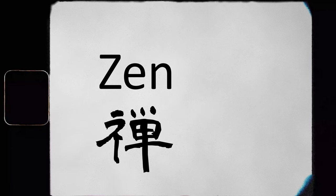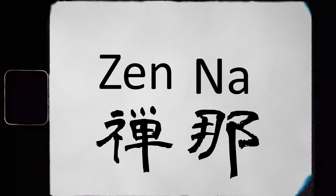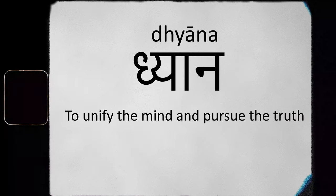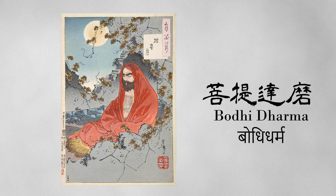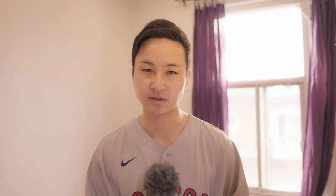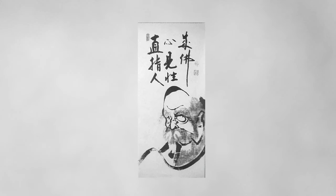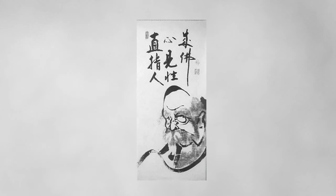Zen is an abbreviation of Zen-na, which is a transliteration of the Sanskrit word that means to unify the mind and pursue the truth, and refers to Zen Buddhism that practices the Zen. Zen Buddhism is obviously a part of Buddhism. The founder of Zen Buddhism is Daruma, who was the 28th apprentice of Buddha. He was an Indian and went to China in the 6th century. He just focused on the concept of Zen, not the rest of Buddhist thought — he considered Zen was the most important part of Buddhism. That's how he created Zen Buddhism.